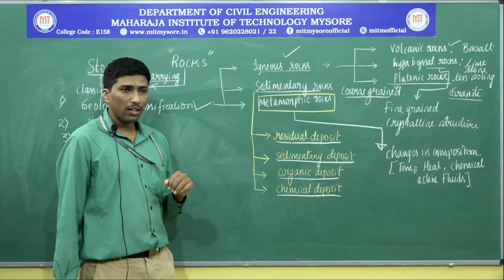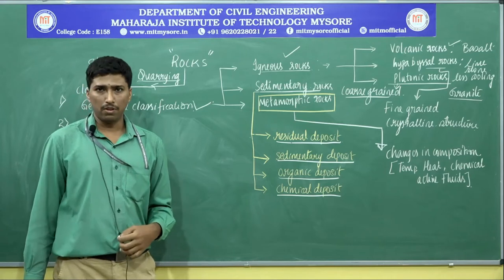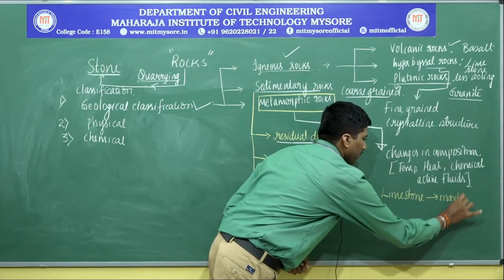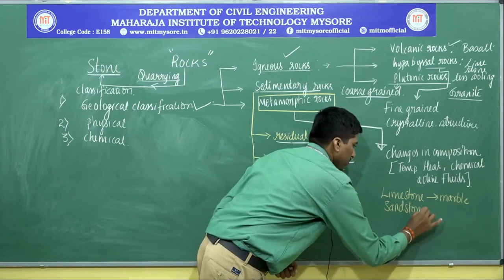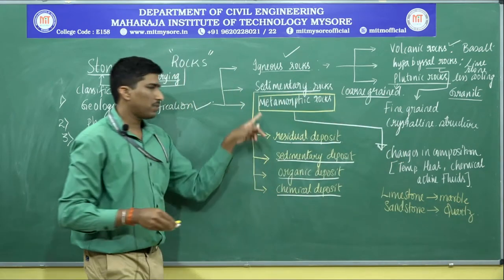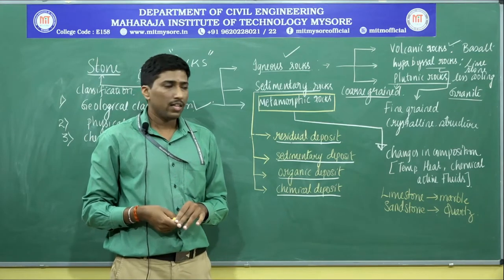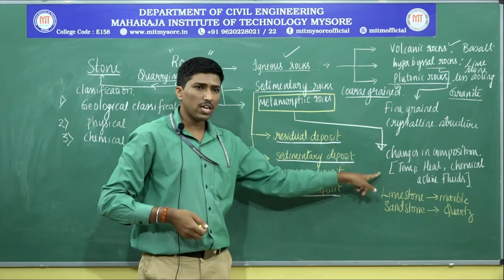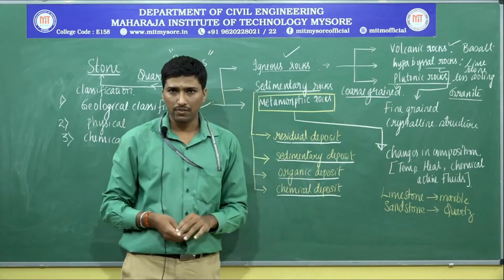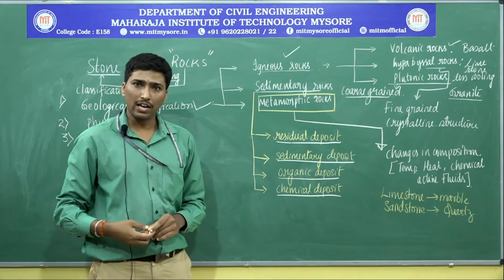Examples of metamorphism include limestone changing into marble, and sandstone being converted into quartzite. The different types of metamorphism are dynamic metamorphism, plutonic metamorphism, and thermal metamorphism. These changes are caused by three active agents: temperature, heat, and chemically active fluids. Care must be taken in the selection of different types of stones when utilizing them for construction purposes.